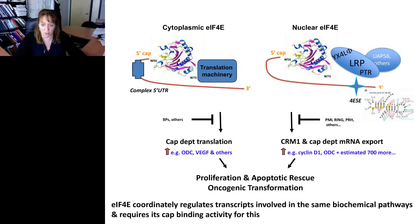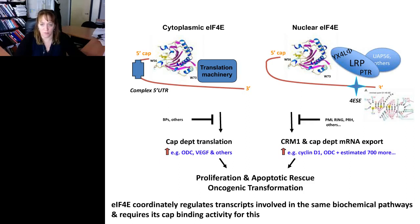We can fractionate cells into nuclear and cytoplasmic fractions and directly observe the modulation of RNA export. It's estimated that around 700 transcripts are involved. Some targets, such as ODC, are targets of both the export and translation functions of 4E, making 4E a potent effector of their expression. Other transcripts such as VEGF are only translation targets, and cyclin-D1 seems to be mainly an RNA export target. Together, these nuclear and cytoplasmic functions of 4E contribute to proliferation and apoptotic rescue functions and help drive oncogenic transformation.